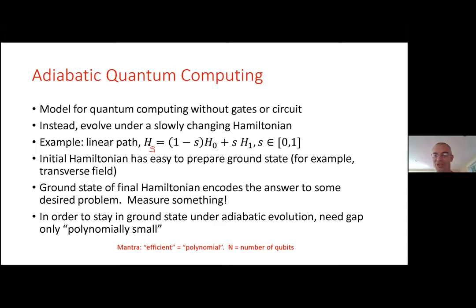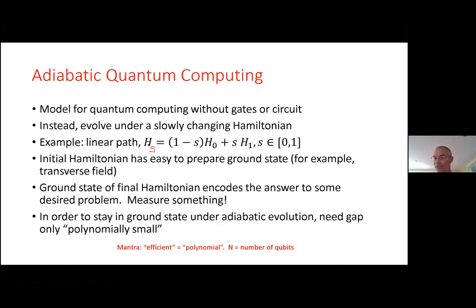There's a mantra in computer science: we use n to denote the number of qubits or problem size. Something is efficient if the time it takes is at most polynomial in n — like n, n², or n³. A time bigger than polynomial, maybe even exponential, is not efficient. To stay in the ground state efficiently, we want the gap to be only polynomially small, so we can stay in it by taking polynomial time.